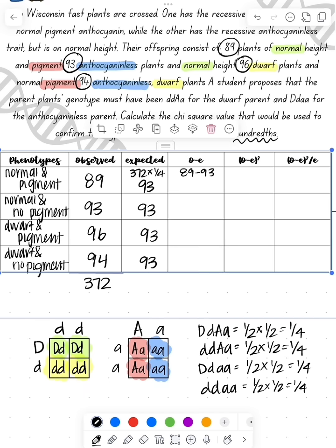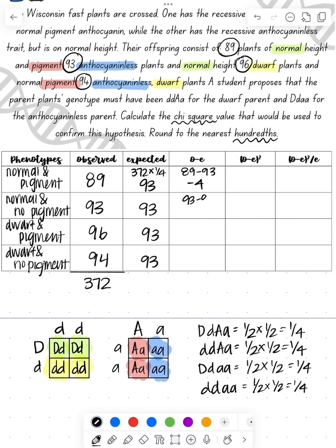So now we take whatever's in our observed column and we subtract it with our expected. So we should get negative four, zero, three, and then one. So we take that value and we're going to square it. So then we get 16, zero, nine, and one.